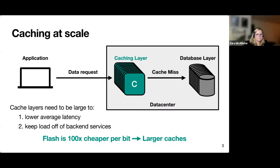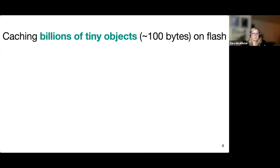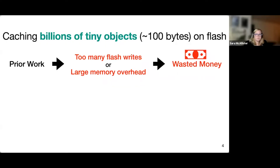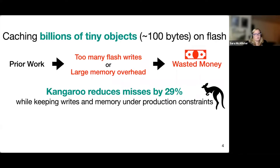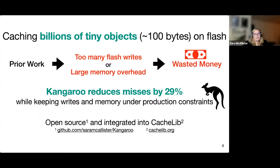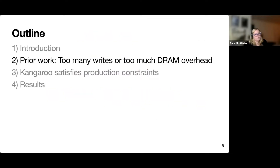That leads us to the overall problem that Kangaroo is trying to solve, which is caching billions of tiny objects on flash. In prior work, we either have too many flash writes or a large memory overhead when looking at flash caches and tiny objects. Either way, we waste money on the flash cache. Kangaroo works to keep writes and memory under production constraints while reducing misses by 29% over prior work. Kangaroo is open source and integrated into CacheLib, Facebook's caching engine used in production. Now I'll go into the prior work, show how it fails, how Kangaroo satisfies production constraints, and then the results.